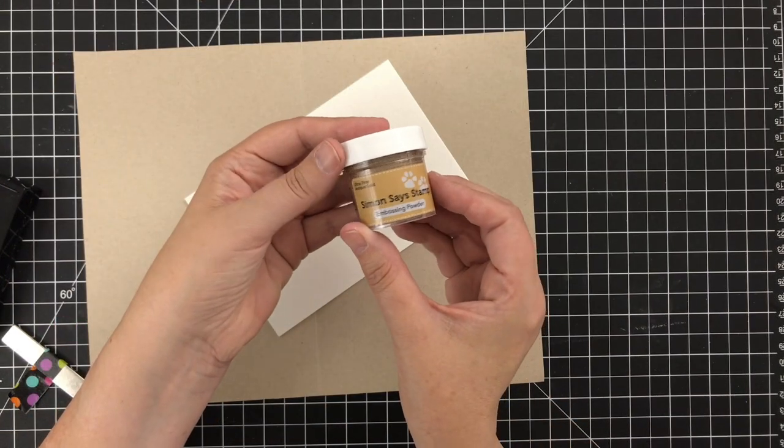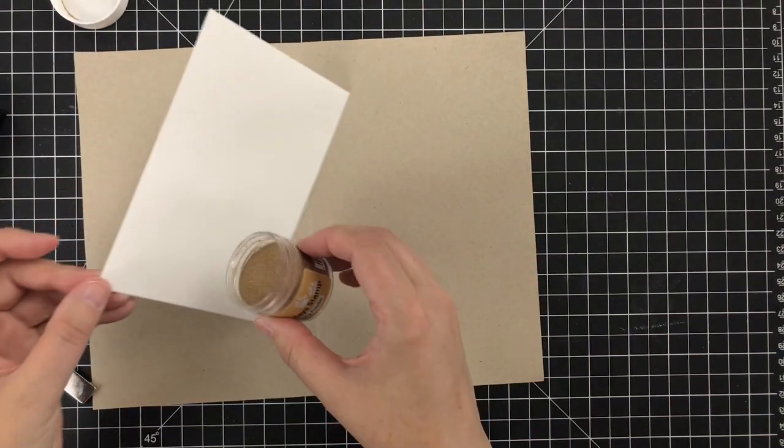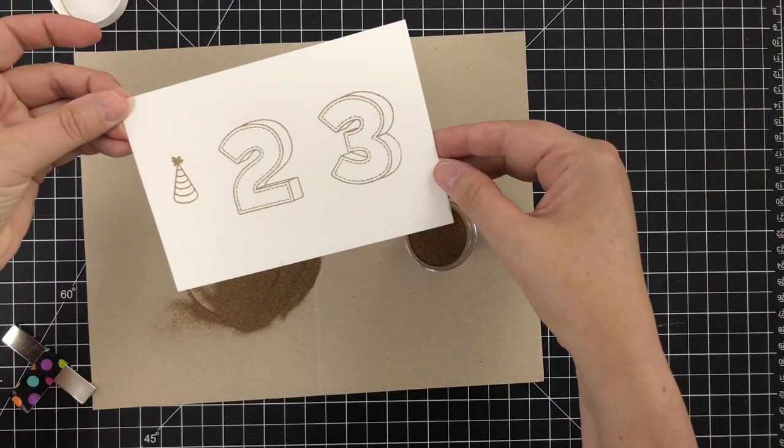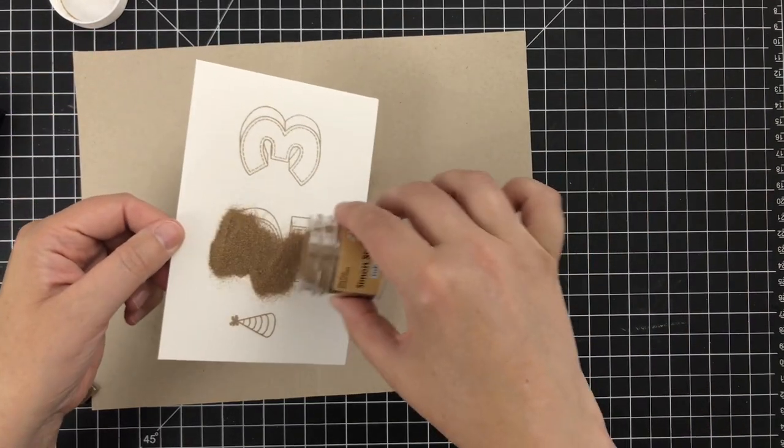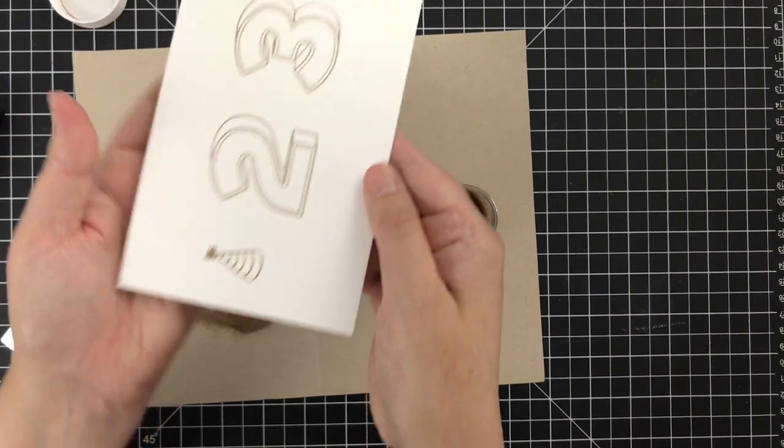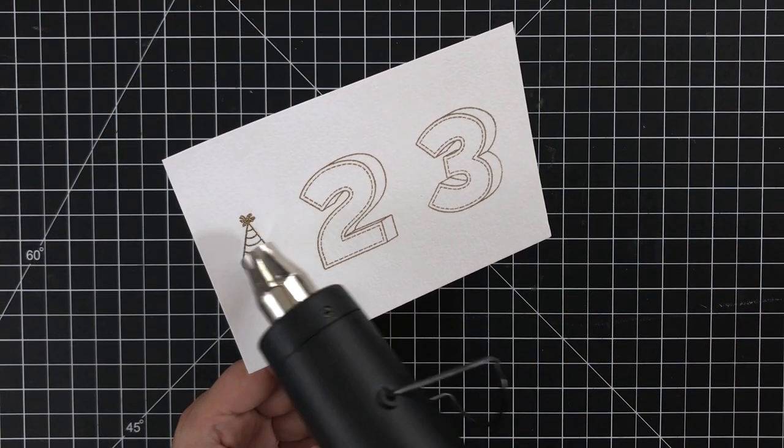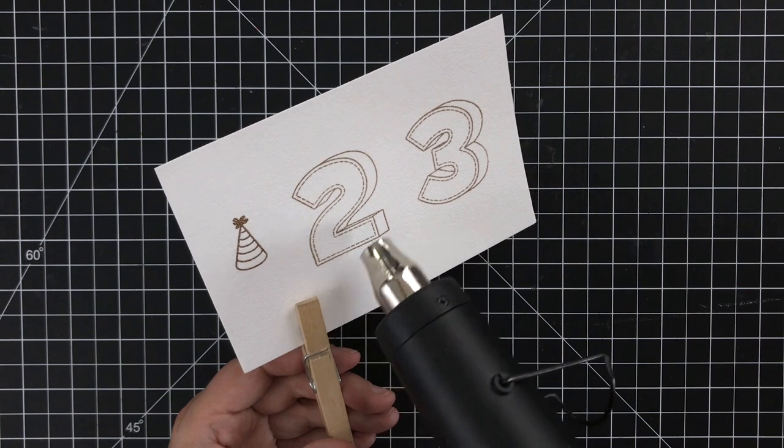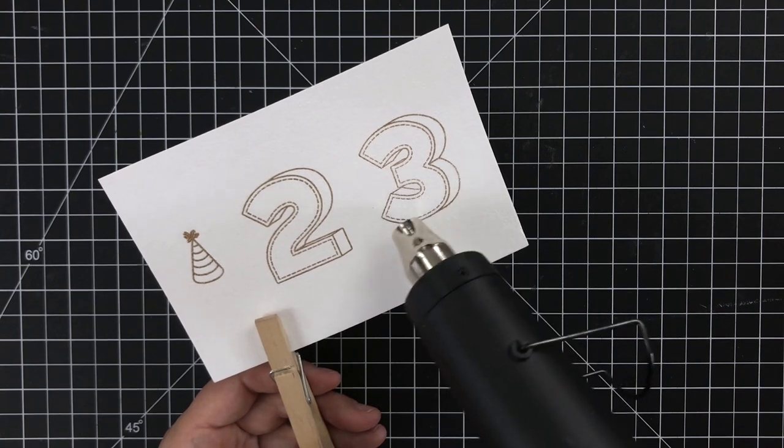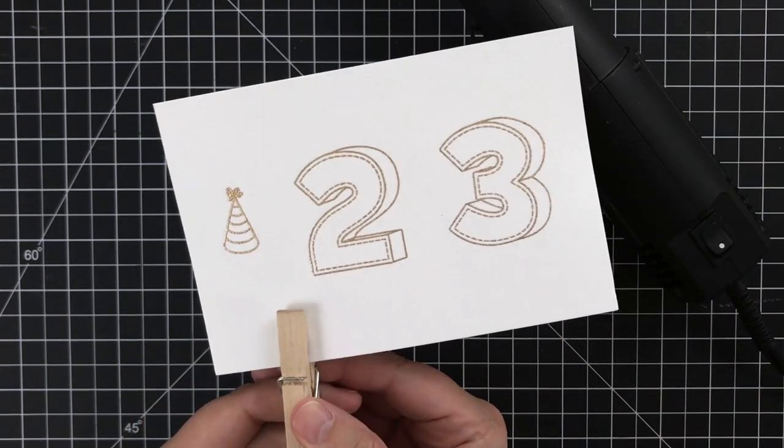So I'm using my Versamark ink here, and I'm just going to get these stamps nice and inky. And I'm going to give this a really good press down. Just really press over each of these numbers and get the hat as well so that it transfers my sticky ink. And now I'm ready to pour on this Antique Gold Powder from Simon Says Stamp. I'm going to sprinkle that on, and the magic ensues. As you can see, it sticks to where I've stamped. And it's pretty clean, actually. I blow a little off here, but by and large, it's where I want it to be.